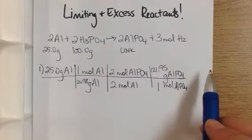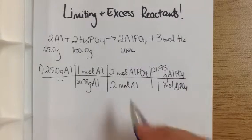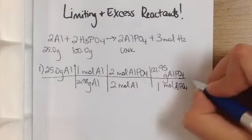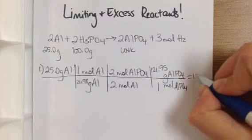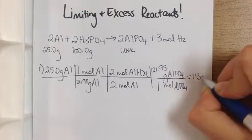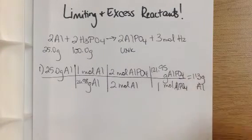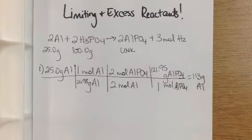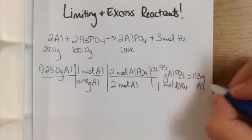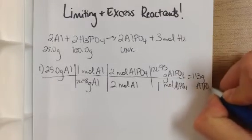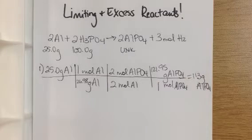Okay, multiply across, multiply across and divide, and I get in this case 113 grams of aluminum. So what this means is that if I have 25 grams of aluminum to start with, I should be able to make 113 grams of aluminum phosphate.